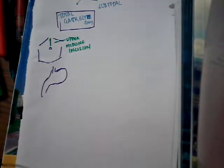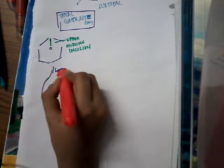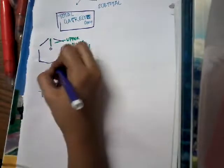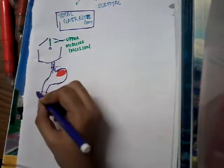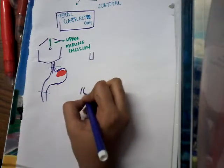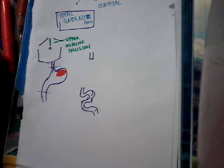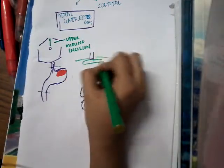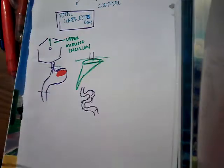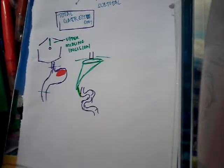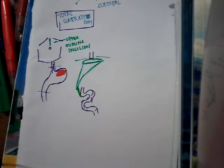Total gastrectomy is done if the tumor is bigger and involves the upper part of the stomach. We clamp and cut the stomach at both ends — at the lower end of the esophagus and at the pylorus. The diaphragm is here, and from the right crus of the diaphragm there is a ligament called the ligament of Treitz, which joins the right crus of the diaphragm to the duodenal-jejunal junction.